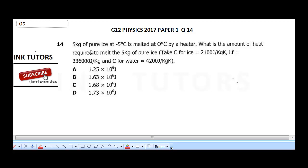Now, it says 5 kg of pure ice at minus 5 degrees Celsius is melted at 0 degrees Celsius by a heater. What is the amount of heat required to melt the 5 kg of pure ice?